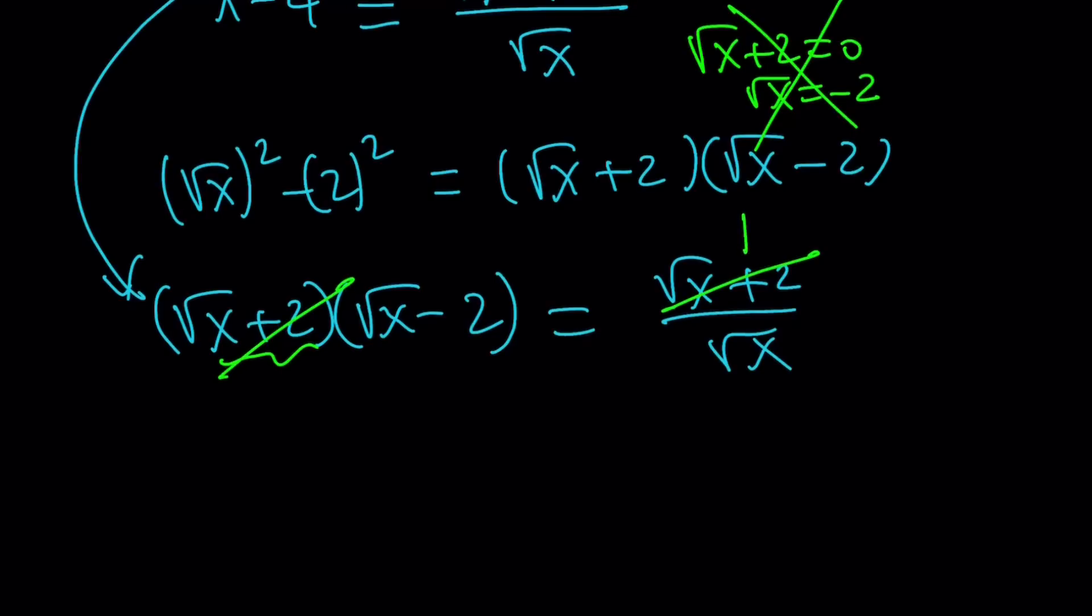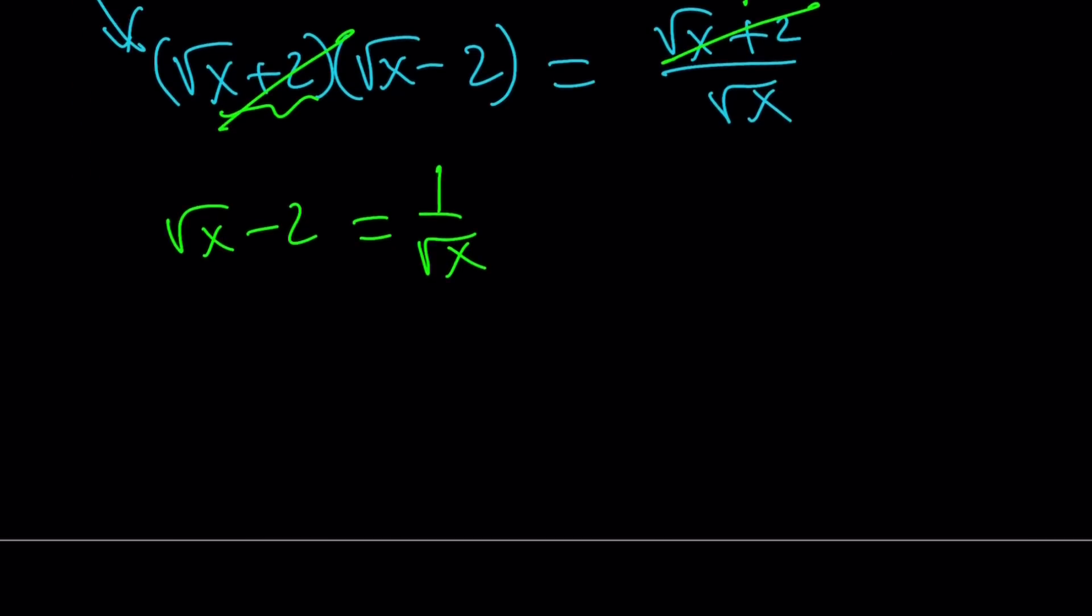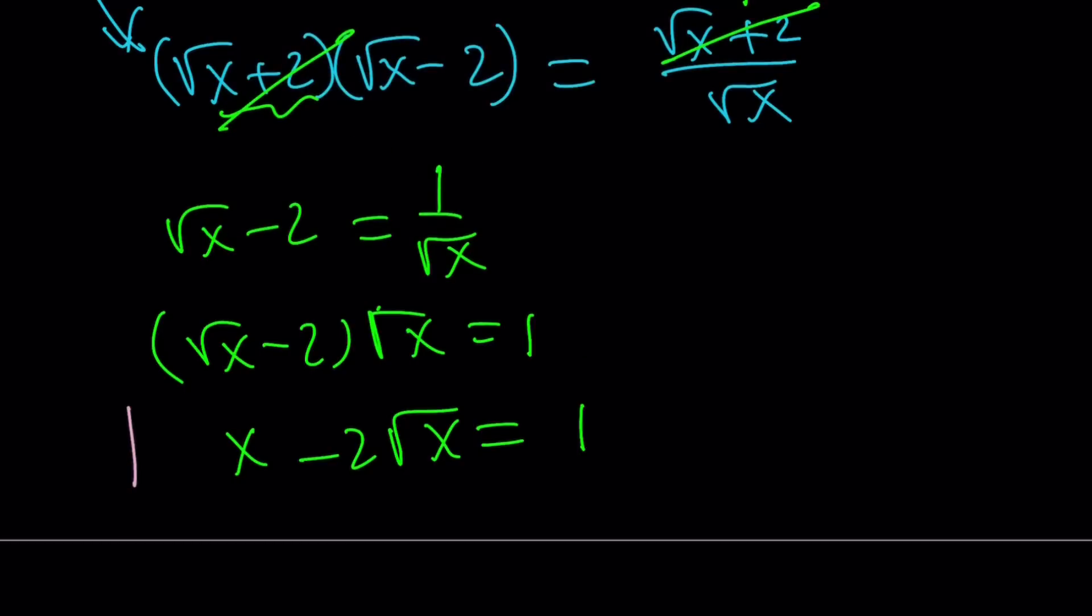And when we get rid of it, obviously, we have a 1 here, so let's rewrite it. And what is that supposed to mean? Cross multiply. Let's do it. The square root of x minus 2 times the square root of x equals 1. If you distribute, you get x minus 2 times the square root of x equals 1. And what was I looking for? I was looking for this one. And we got the answer.